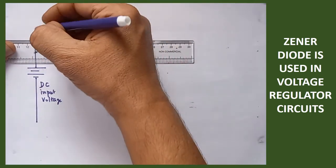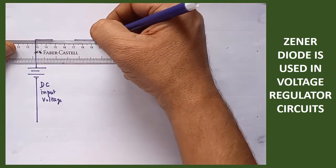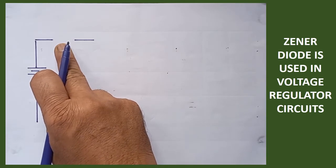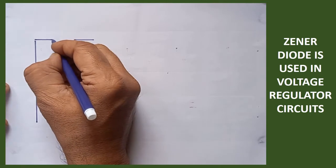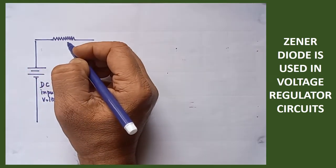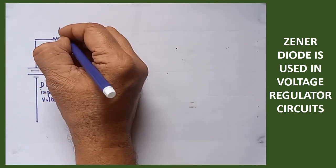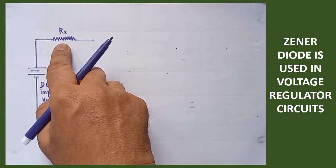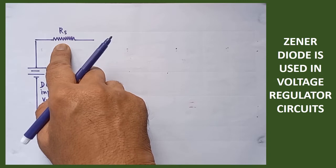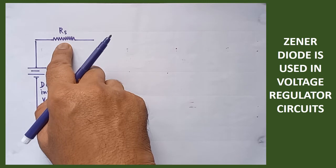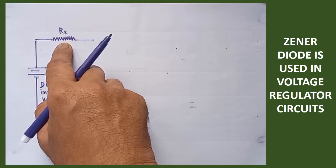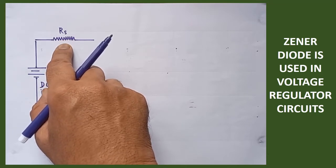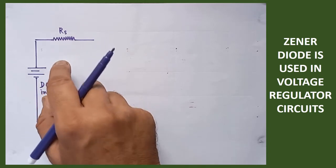Here when a resistance is connected, the name of the resistance used here is called series resistance. That series resistance, its name is RS. Since it is connected in series, it is named RS. This series resistance plays a vital role — it is used to limit the Zener current. The current passing through the Zener diode can be limited with its help, and by using this resistance we are able to avoid any damage to the Zener diode. That is why this is called current limiting resistance.